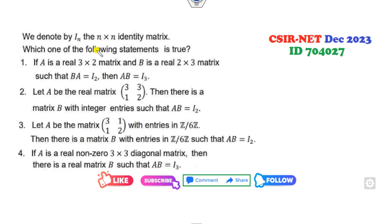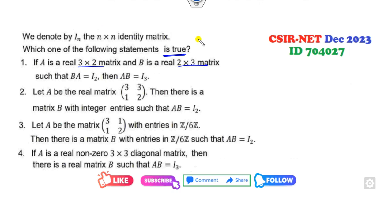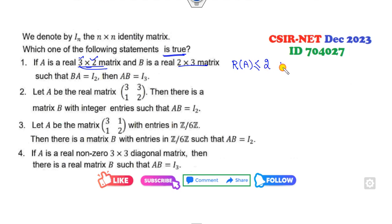Which of the following statements is correct? I have told you many times: whenever a matrix is given, always try to solve the problem with the help of eigenvalues or the rank of the matrix. In this case, the matrix is not given explicitly, so I will use the rank method. A is a 3×2 matrix. What is the rank of A? It is at most min(3,2) = 2. What is the rank of B? It is at most min(2,3) = 2.